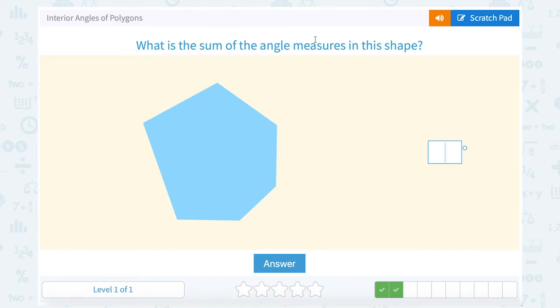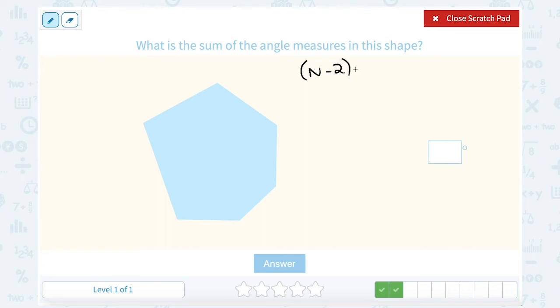What is the sum of angle measures in this shape? We know we're going to be using n minus 2 times 180. So let's count how many sides. I'm going to start here: 1, 2, 3, 4, 5, 6. We did this problem just a second ago. So we already saw that 6 minus 2 times 180, or 4 times 180, gave us 720.